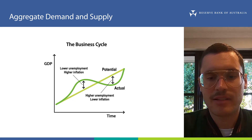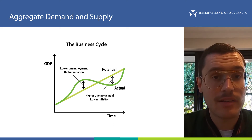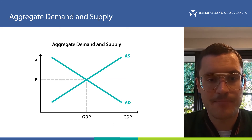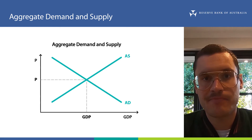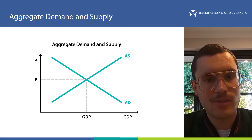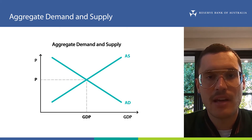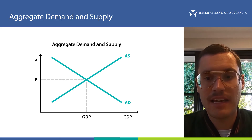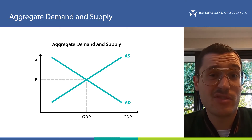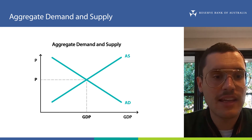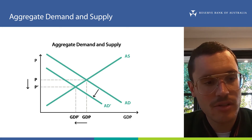Let's use this aggregate demand and aggregate supply framework to think about how COVID-19 affected the economy. Initially you might think COVID-19 simply represented a fall in aggregate demand — and aggregate demand has certainly fallen. Lockdowns restricted the normal activities and spending of households and businesses. People significantly reduced spending on things like eating out, and businesses decided not to invest as much because of uncertainty. This shifted the aggregate demand curve to the left, so GDP fell and there was downward pressure on prices.